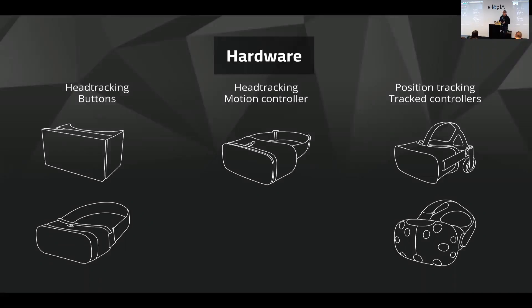The first thing you need to know is your hardware. On the left you see the more affordable devices like the Google Cardboard and Gear VR. These headsets have head tracking so they can turn the camera with your head, and they only have a few buttons — on the Cardboard you only have one button. On the right you have the best headsets, which have position tracking and tracked controllers you can track in space. And in between we have the Google Daydream, which has head tracking but also a small controller. You need to know your hardware to know what you can do.